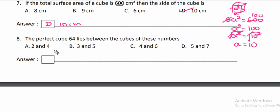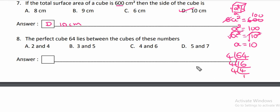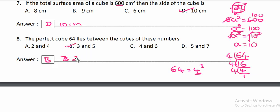The perfect cube 64 lies between the cubes of which numbers? We find the cube root of 64 by dividing: 64 equals 4 cube. The cube root of 64 is 4, which lies between 3 and 5. Therefore, option B, 3 and 5, is the correct answer.